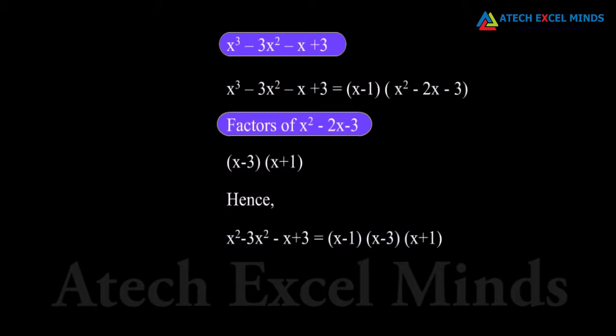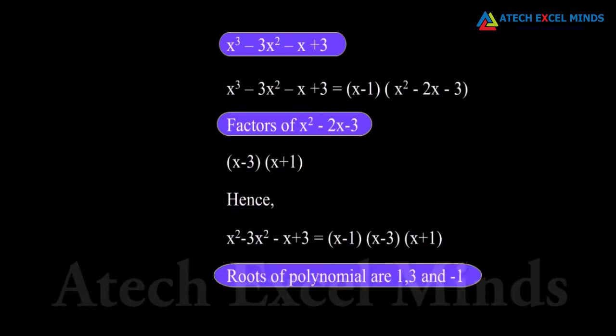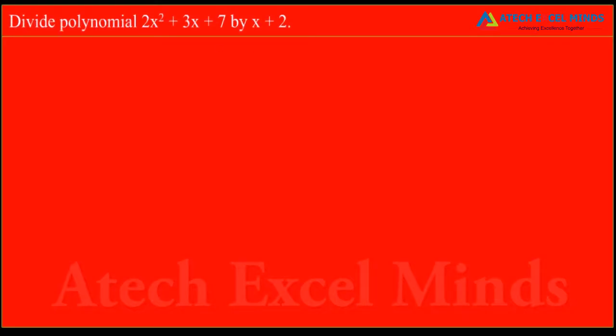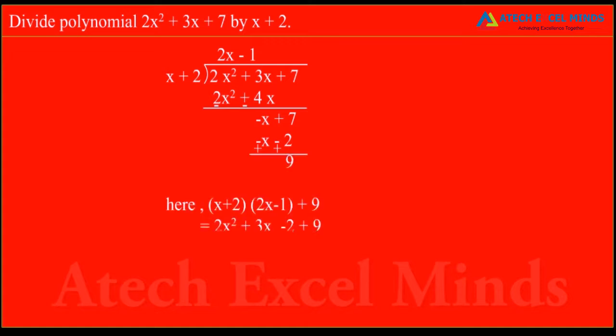The factors of x square minus 2x minus 3 are x minus 3 and x plus 1, which can be easily found. Thus, the roots of this polynomial will be 1, 3 and minus 1. To find zeros of polynomial, we use the method of division algorithm.